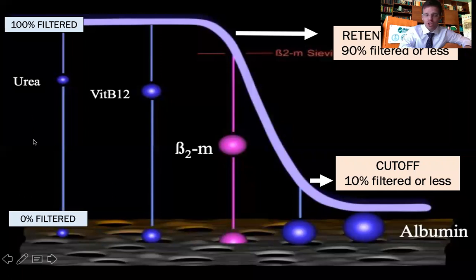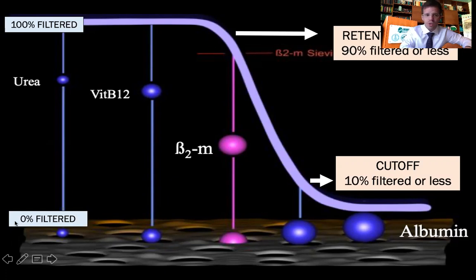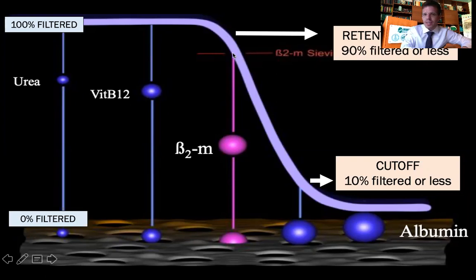Membranes usually don't have uniformity in their pore size and density. This figure represents a membrane and here is the sieving curve of a given membrane. On the x-axis we represent the size of the molecules and on the y-axis we represent the percentage of extraction of those molecules. For example, urea and vitamin B12 are 100% filtrated — the sieving coefficient for these two molecules with this membrane is 1.0.